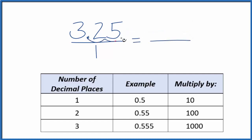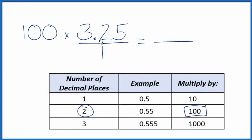Since we have 2 decimal places here, we're going to multiply by 100. 100 times 3.25, that's 325. So now we have a whole number.